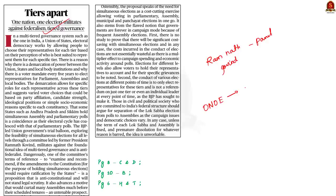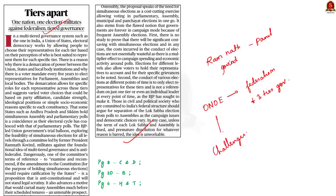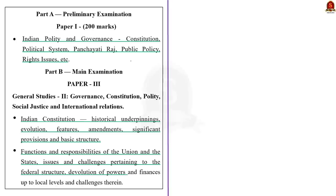But some politicians are saying that bringing in simultaneous elections would affect federalism and three-tier governance in our country. Based on these arguments, this article is written. In our discussion, we will understand how One Nation, One Election affects federalism and three-tier governance. We will also see some challenges in implementing the One Nation, One Election Plan. The syllabus regarding this discussion is given here — you can take a note of it.